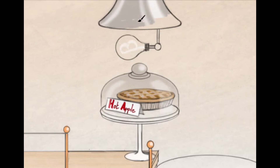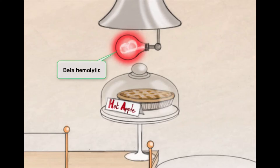Now we're drawing a heating lamp over the pie. Notice anything special about the bulb? That B in the bulb's filaments means that it's our beta hemolytic light bulb. So Group A Strep is beta hemolytic.